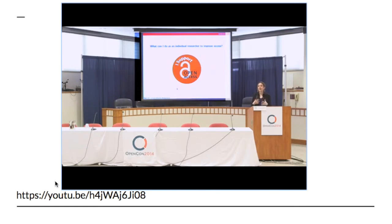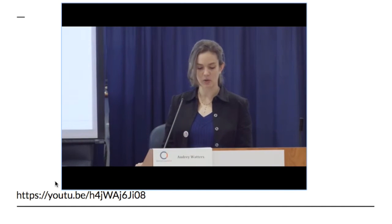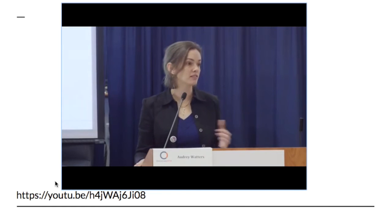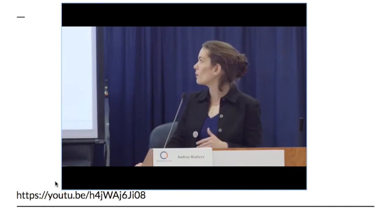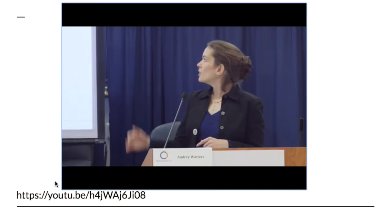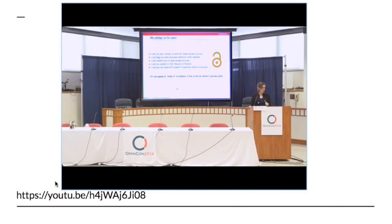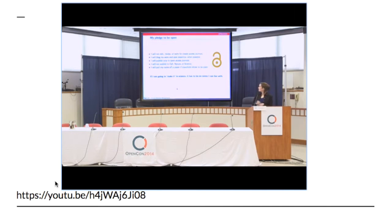I have to ask myself, what is it that I can do as an individual researcher to make sure that access is improved, that more people have access throughout the world? Well, quite simply, I can support open access. And so these are the personal pledges that I have made to be open. I'll break this down one by one and why I've committed to these things. The first is to not edit, review, or work in any capacity for a closed access journal. I think it's really important that as an academic, if I'm going to devote my time, it be to journals and publishers that are improving the access situation and not the contrary. The second one is to blog my work and post preprints.